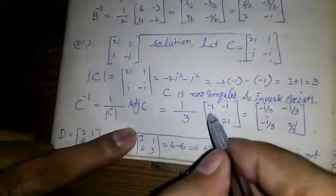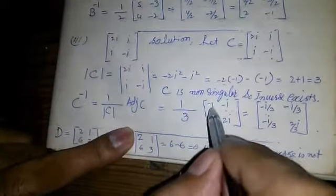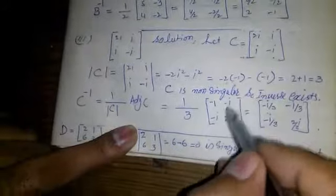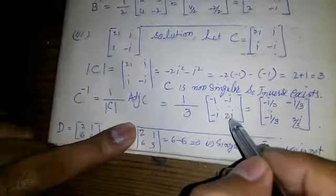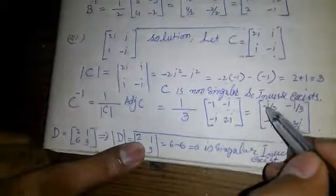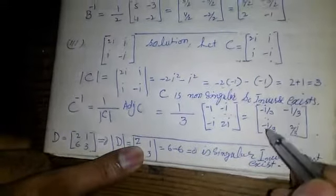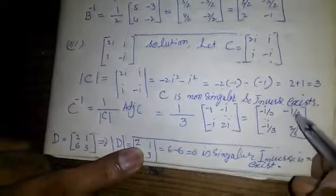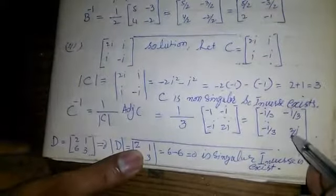C⁻¹ is equal to (1 / det(C)) times the adjoint of C, which equals (1/3) times [[-i, -i], [-i, 2i]], giving C⁻¹ = [[-i/3, -i/3], [-i/3, 2i/3]].